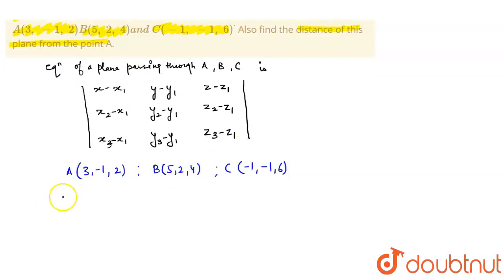So this implies |X-3, Y-(-1), Z-2; 5-3, 2-(-1), 4-2; -1-3, -1-(-1), 6-2| equal to 0.